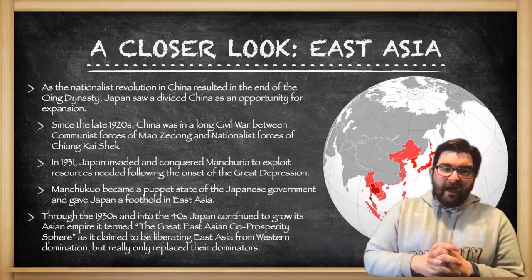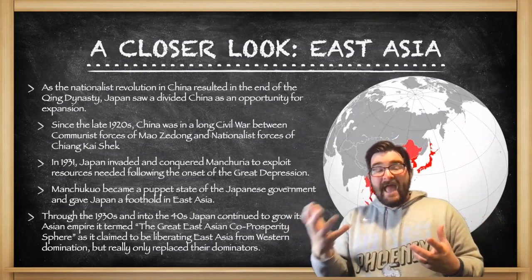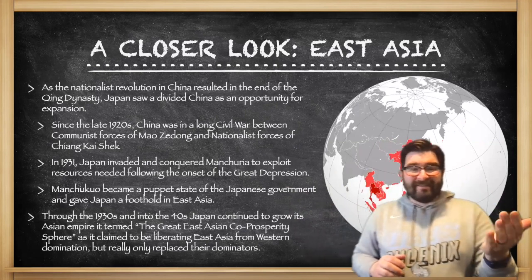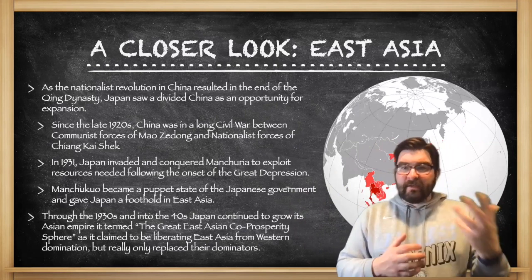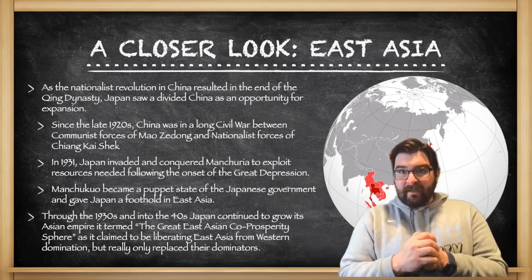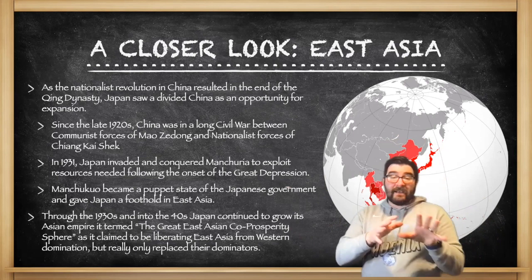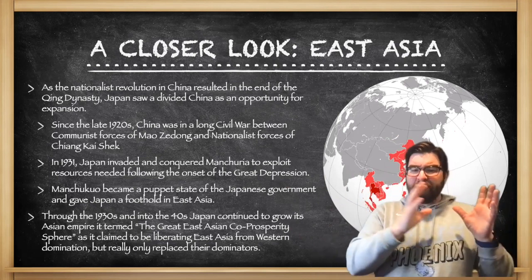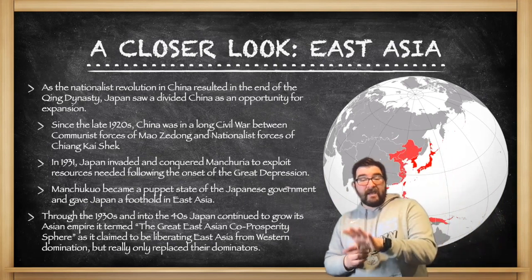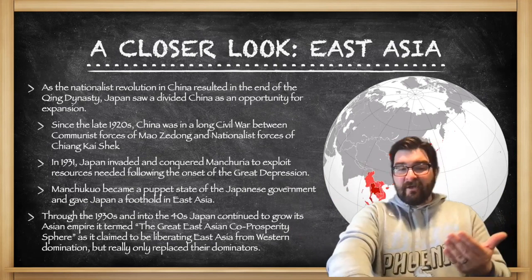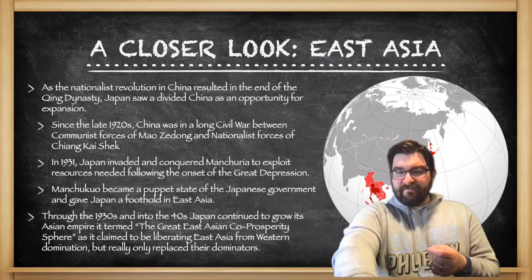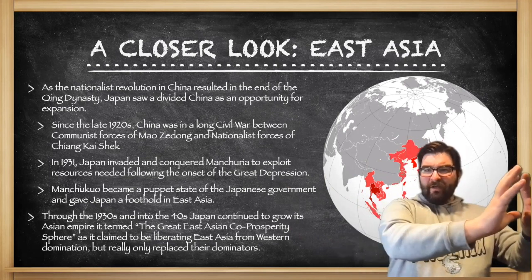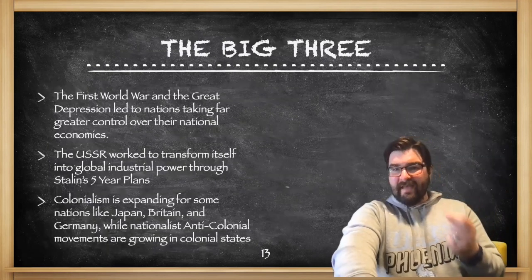In East Asia, a nationalist revolution in China resulted in the end of the Qing dynasty. Japan saw a divided China as an opportunity for expansion. Since the late 1920s, China had been in a long civil war between the communist forces of Mao Zedong and the nationalist forces of Chiang Kai-shek. In 1931, Japan invaded and conquered Manchuria to exploit its resources following the onset of the Great Depression. The new territory, a puppet state called Manchukuo, gave Japan a foothold in East Asia that they grew through the 1930s and into the 1940s, claiming to create the Greater East Asia Co-Prosperity Sphere — the idea of driving out Western influence — but it was really just a Japanese-dominated empire.